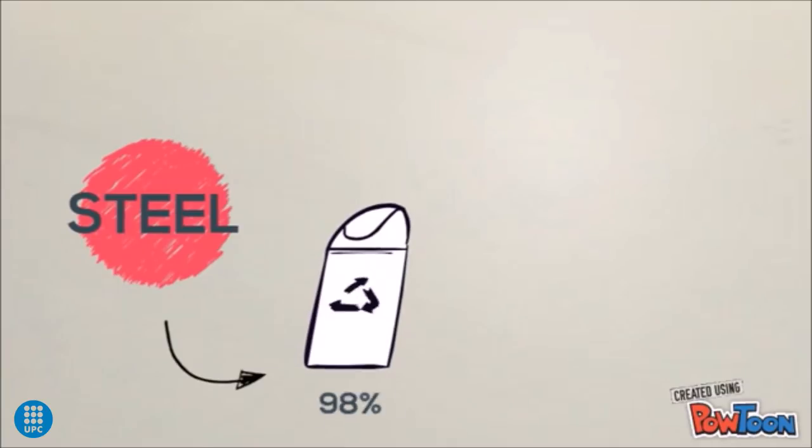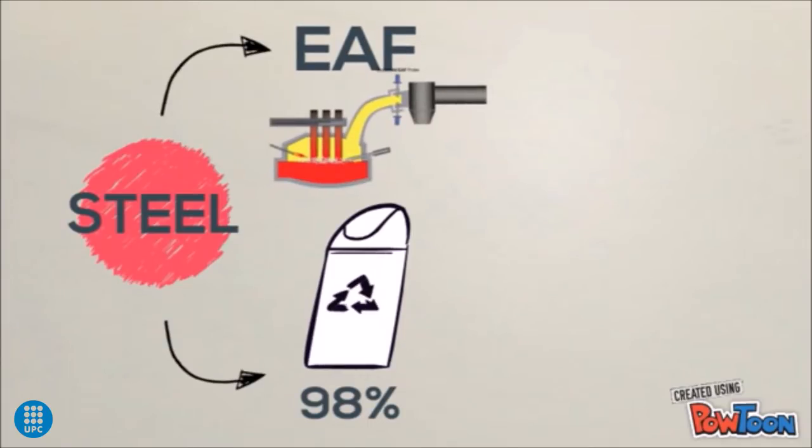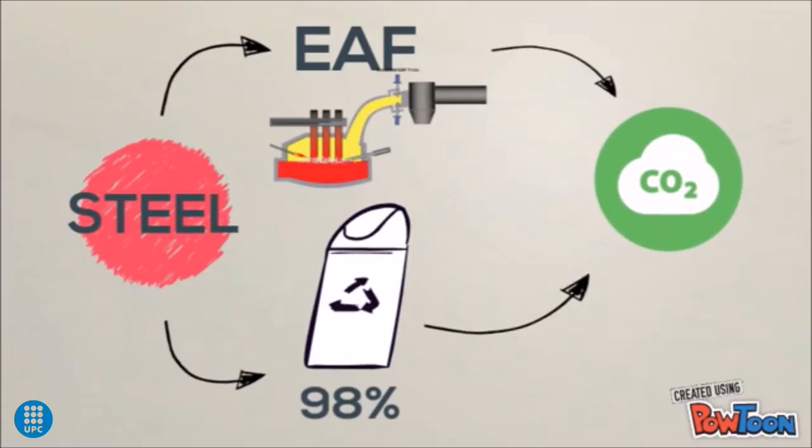However, we have to keep in mind that one of the most important qualities of steel is that it has one of the highest recovery rates for recycling. This recycling process is done in a different furnace, the electric arc furnace. On this one, steel only emits 0.575 tons of CO2 per ton of steel. Much lower.